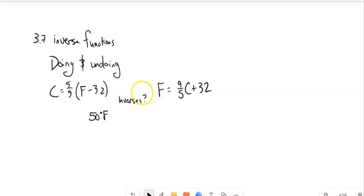So if you'll notice, I have two equations here. C equals 5 ninths times the quantity F minus 32, and F equals 9 fifths C plus 32. These are equations that we can use to convert Celsius to Fahrenheit and Fahrenheit to Celsius.